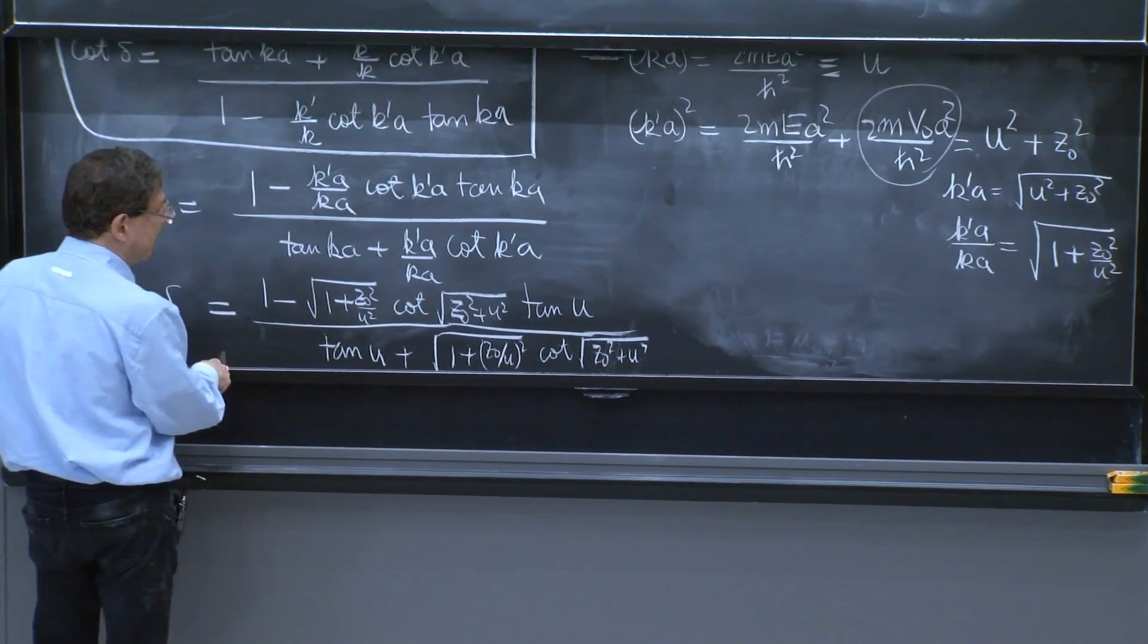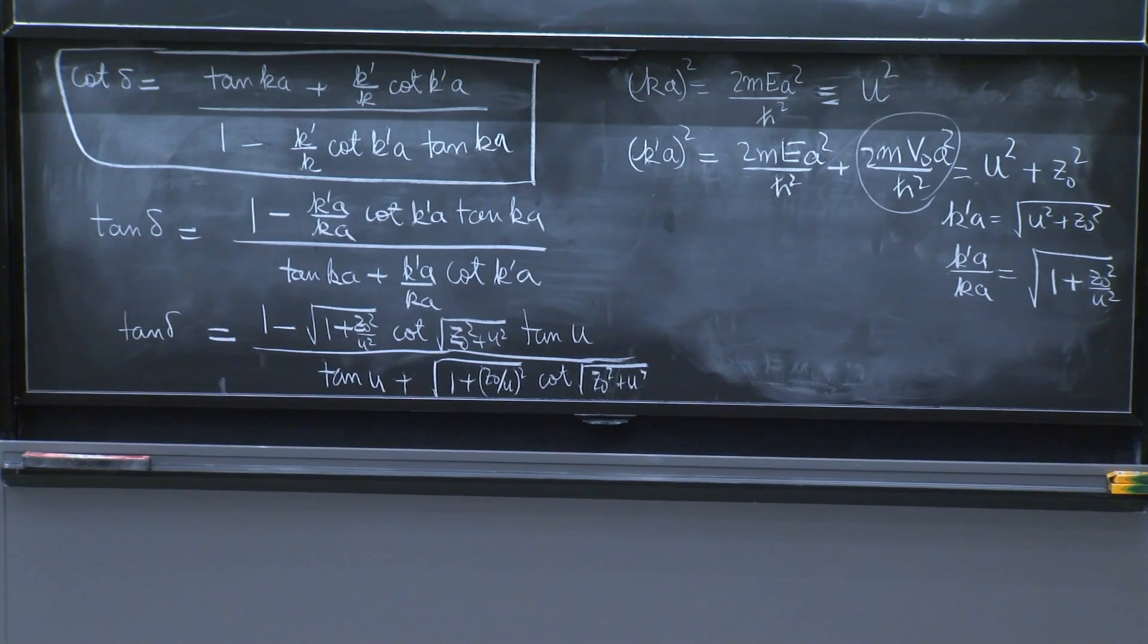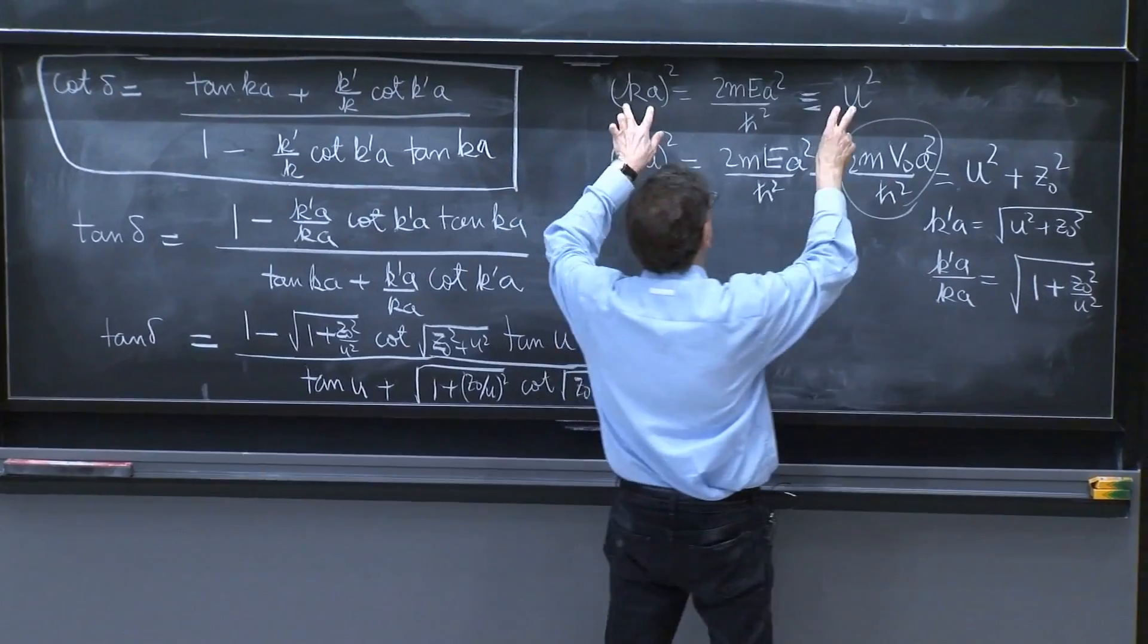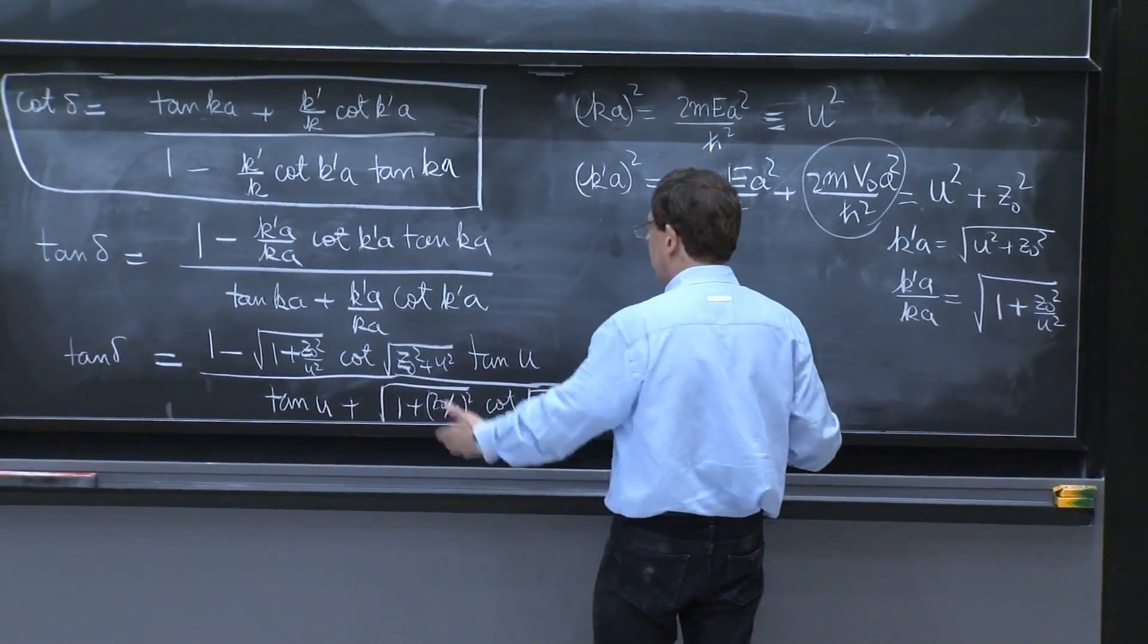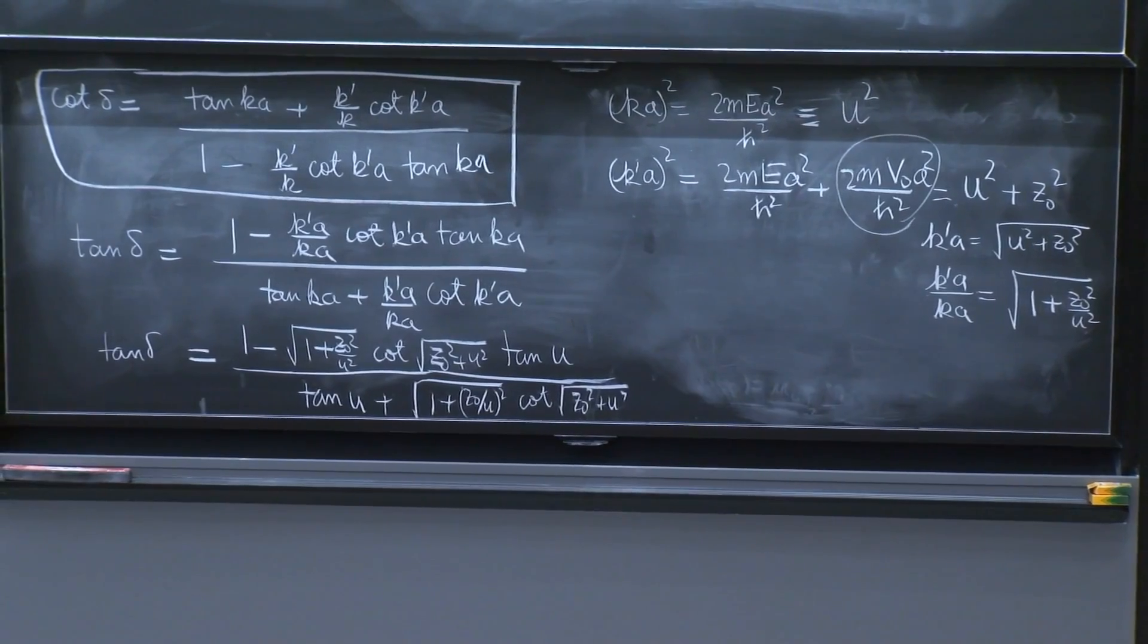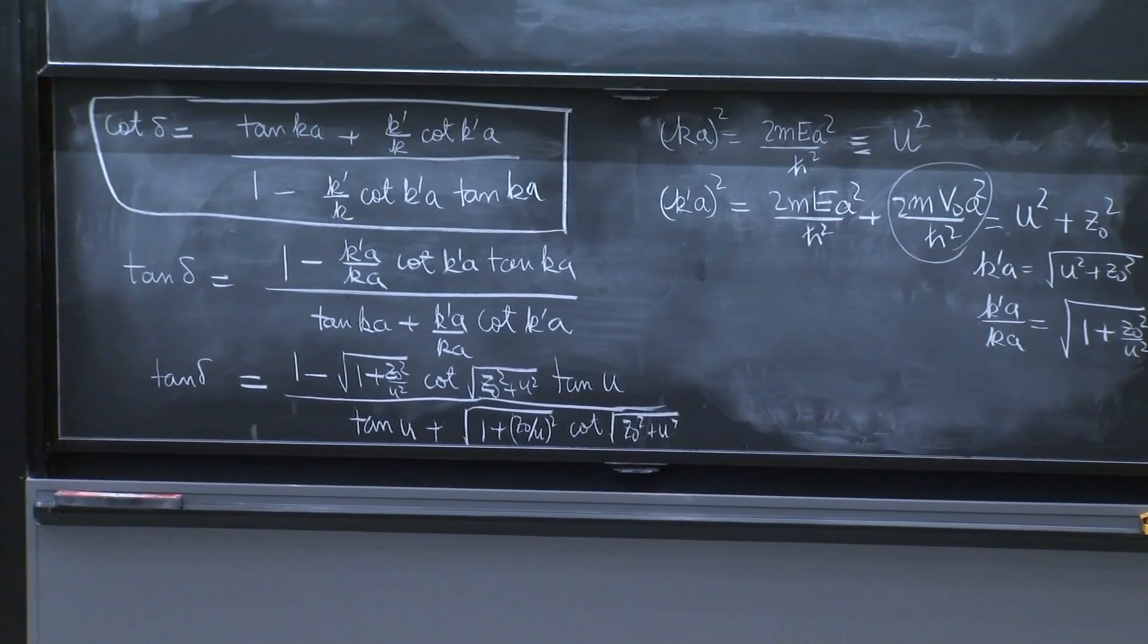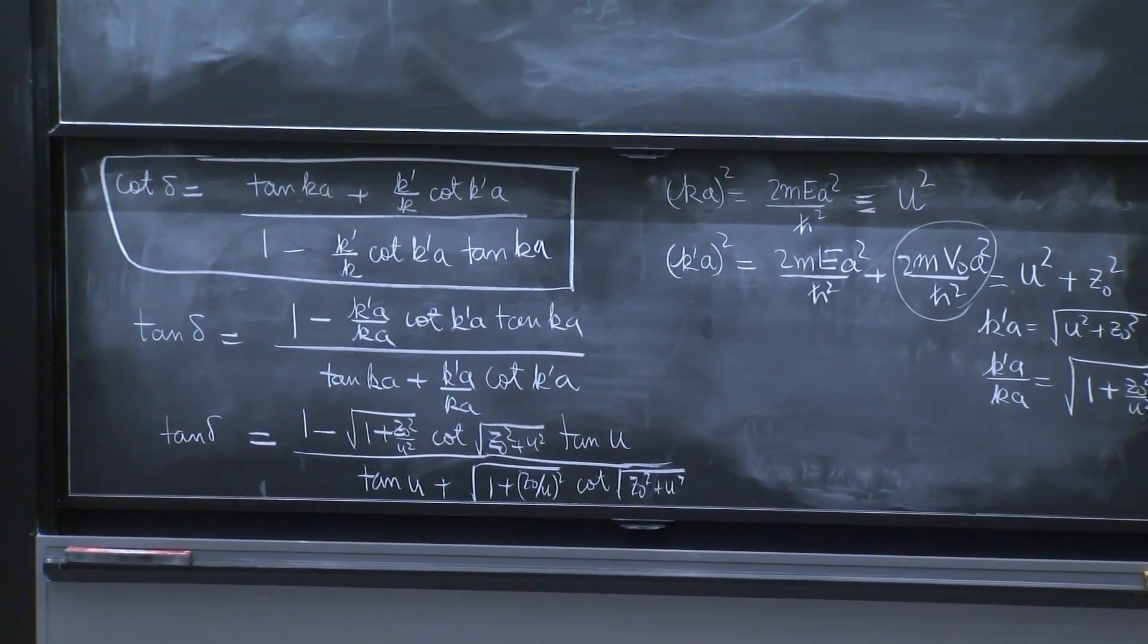So if somebody gives you a potential, you calculate what z₀ is for this potential. You put z₀ there, and you plot as a function of u with Mathematica. And plotting as a function of u is plotting as a function of ka. And that's a perfectly nice thing to do, and it can be done with this expression.